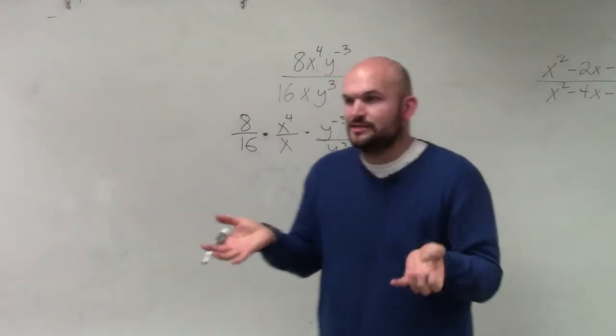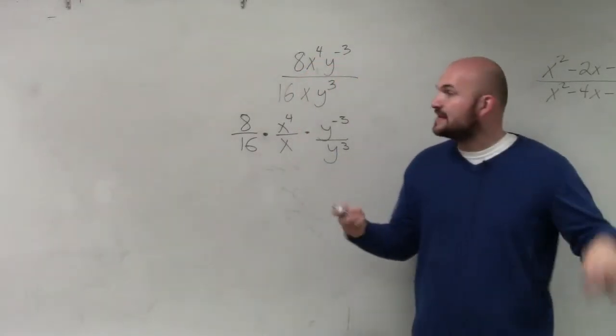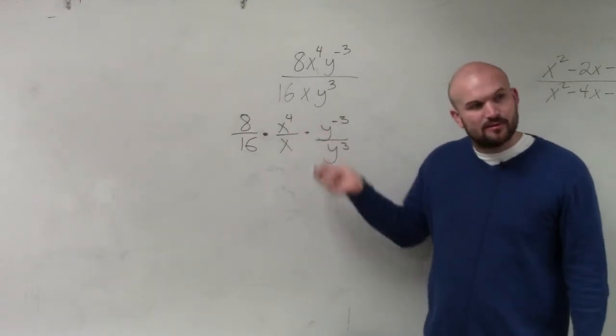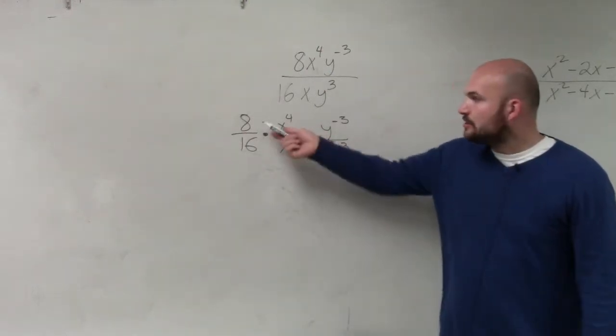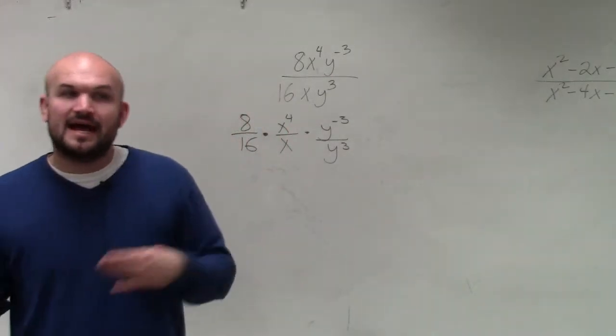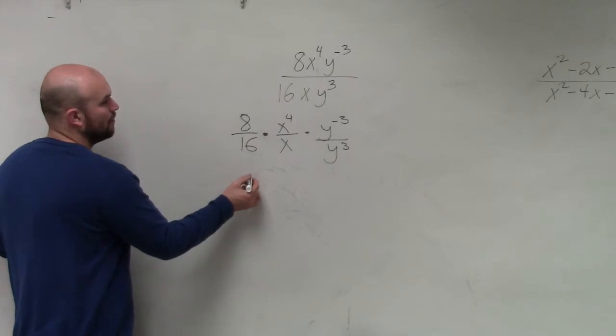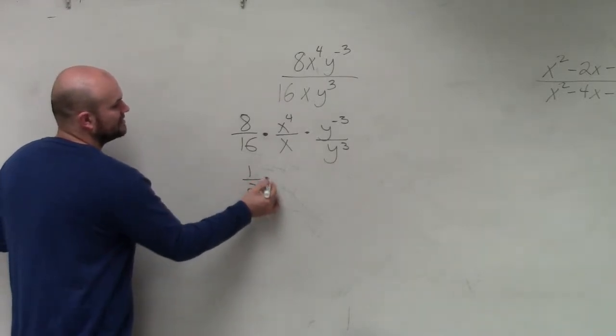So simplify your like terms, because we can only apply the rules of exponents when the bases are the same. I can only combine x's with x's and the y's with y's. So we have 8 over 16. 16 does not evenly divide into 8. That has to be reduced.